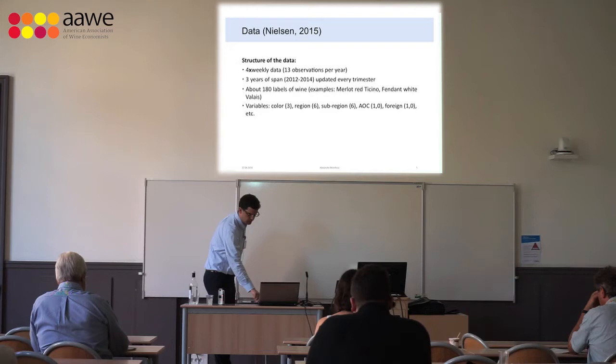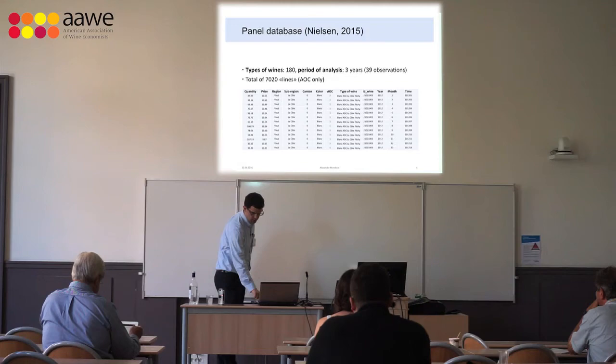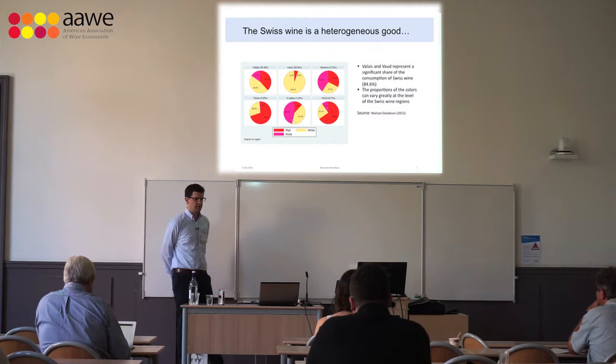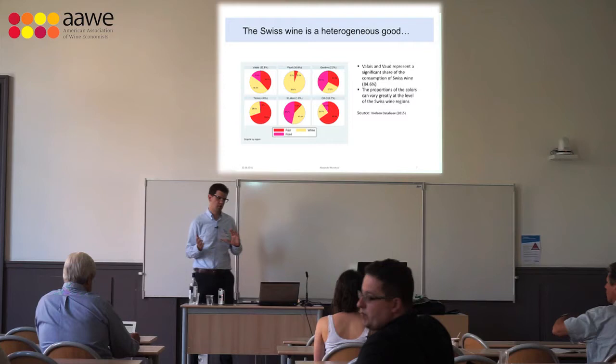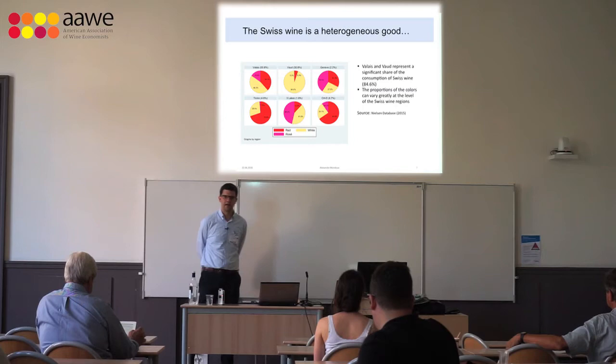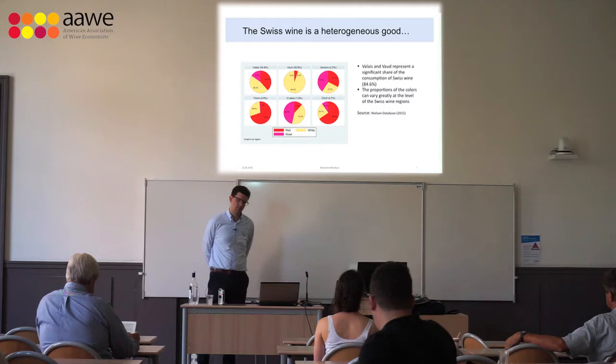Swiss wine is very heterogeneous across regions. For example, for the two main producers, Valais and Vaud, in the first case we have a mixture of red and white. For Canton Vaud it is extremely white — the wine of Chasselas and a bit of Chardonnay. Geneva and Three Lakes are quite specialized in rosé wine. The Italian and German parts are more focused on red.